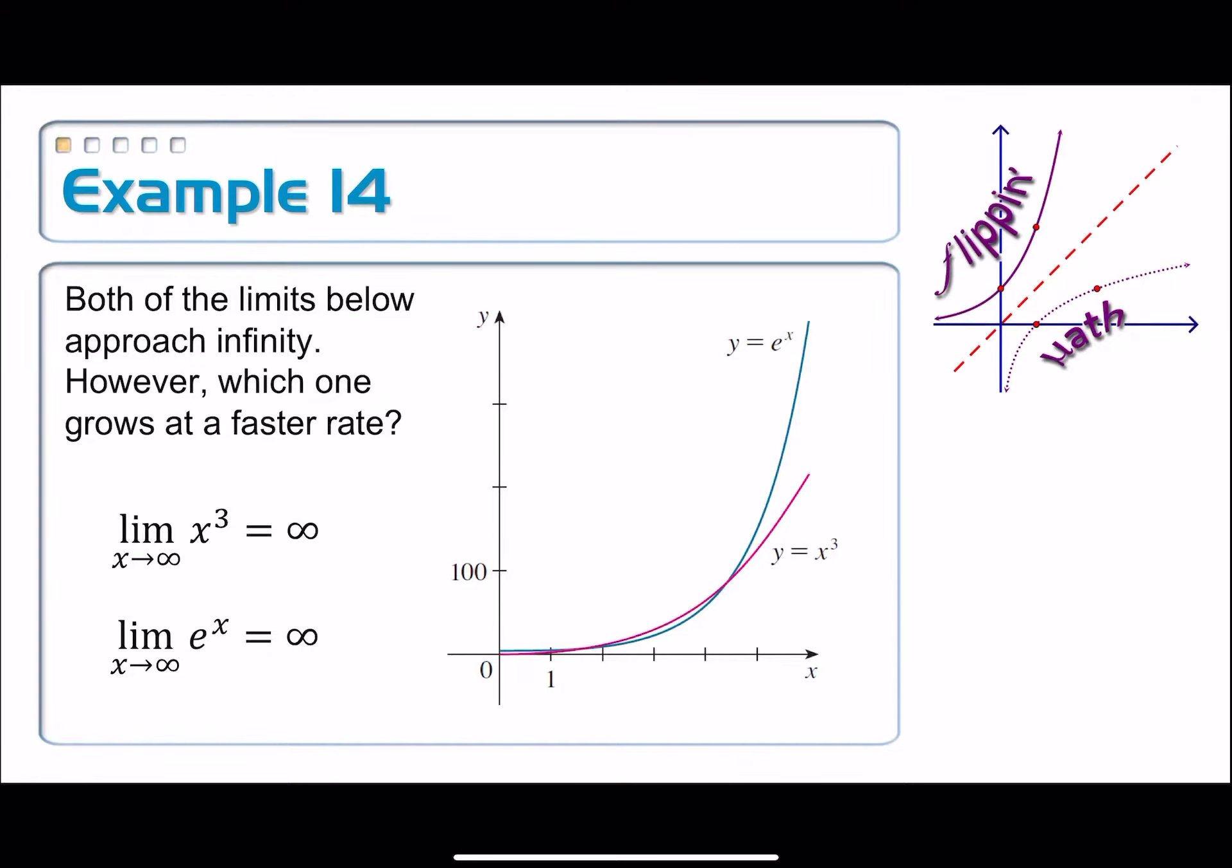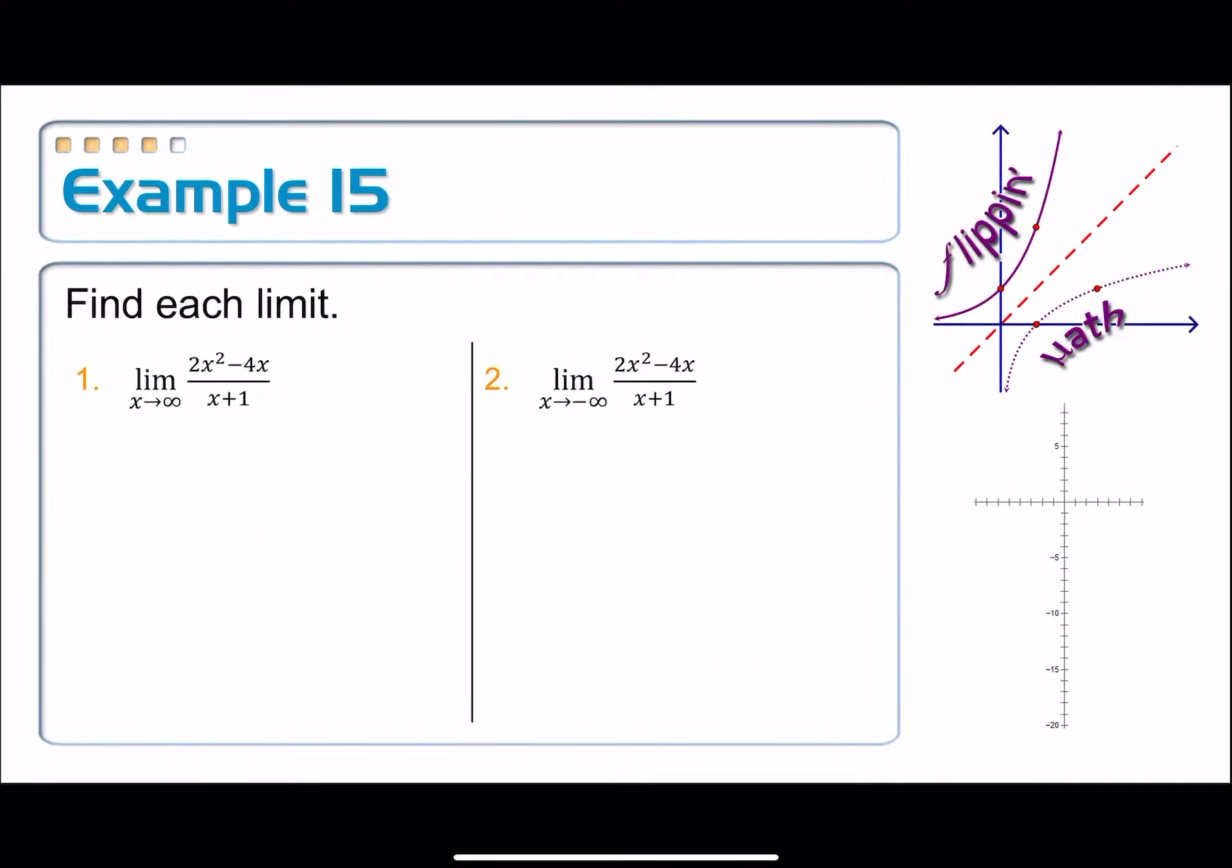And this refers to something called relative growth rates. Whenever I'm dealing with limits at infinity, I can think of, to help me evaluate those limits, I can think of a relative growth rate and just decide what part of this function is growing faster. And that's the part that's going to take over the whole entire limit.